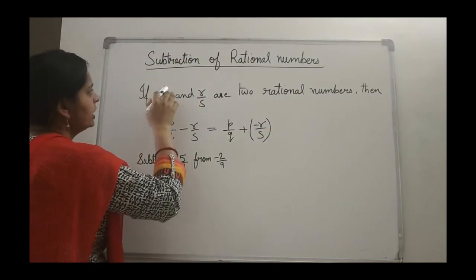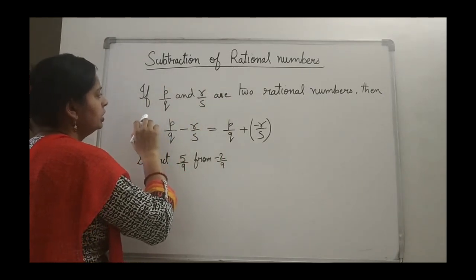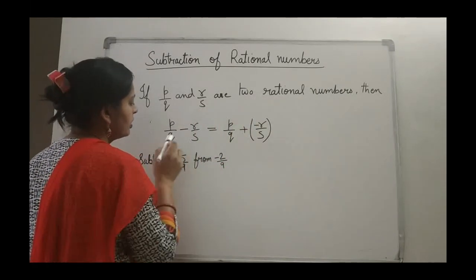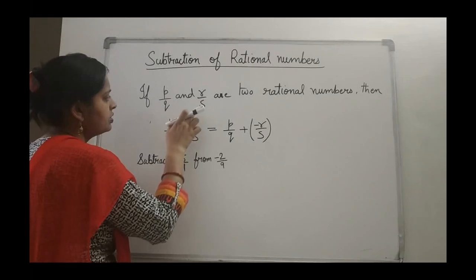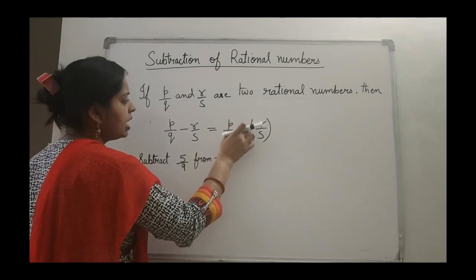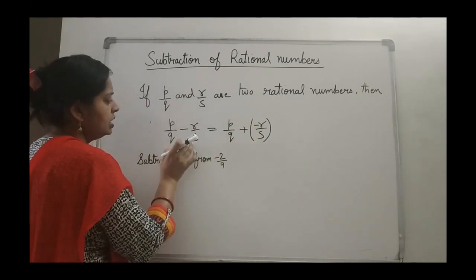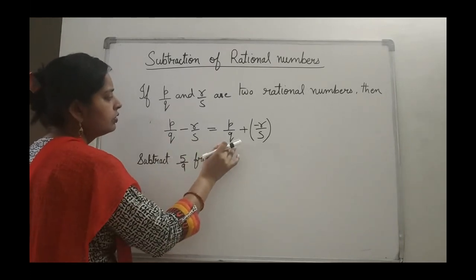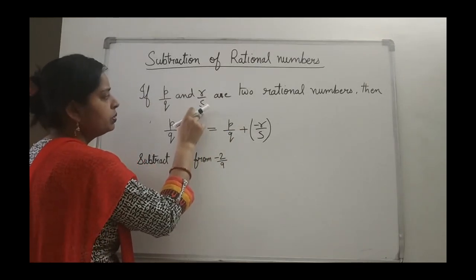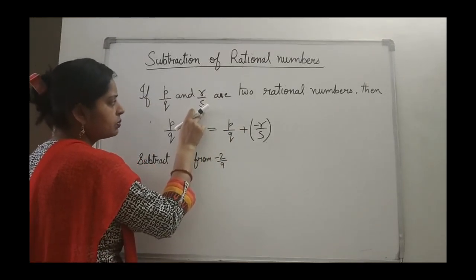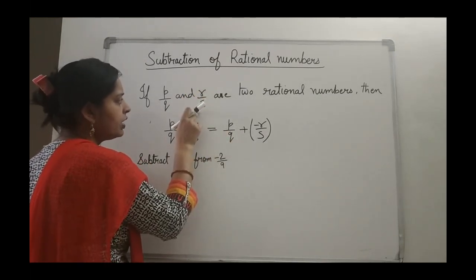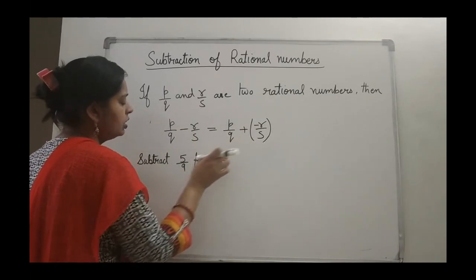Now the next topic is subtraction of rational numbers. If P upon Q and R upon S are two rational numbers, then P upon Q minus R upon S means we subtract R upon S from P upon Q. That equals P upon Q plus minus R upon S. So what we have to do is add the rational number by the additive inverse of the rational number to be subtracted. The additive inverse of R upon S is minus R upon S.